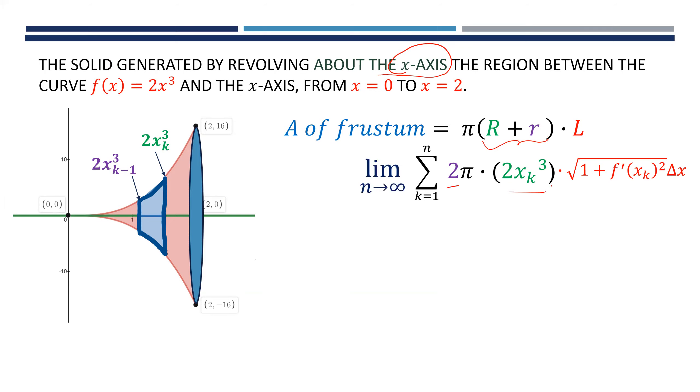We have two function values. Then we're going to take the limit as n goes to infinity. That will give us an integral from zero to two. If we clean this up we would have 4πx³ and square root of one plus the derivative squared.